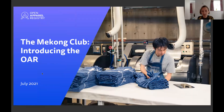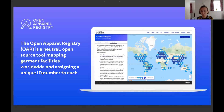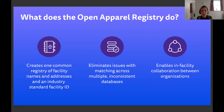At a basic level, the Open Apparel Registry is a neutral and open source tool in which we're mapping garment facilities worldwide and allocating a unique ID number to each. That ID number is really integral to the tool in terms of driving the sharing and exchange of data and enabling interoperability between different systems. What the tool does is create one common registry of facility names and addresses with that industry standard facility ID allocated to each facility, which eliminates issues with matching across multiple inconsistent databases.